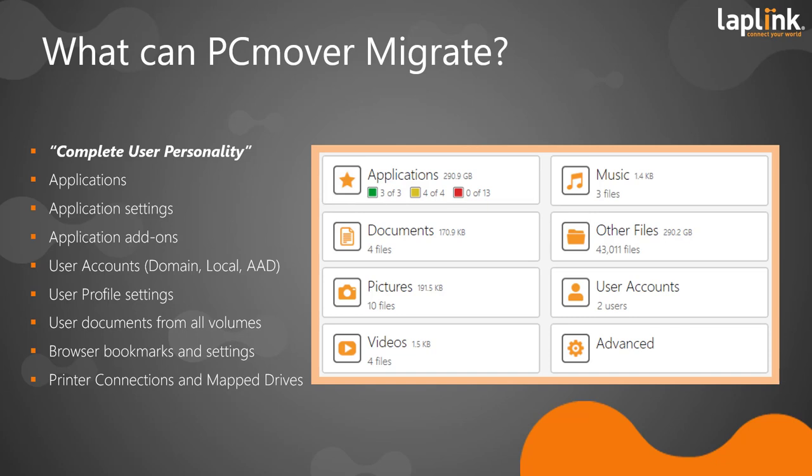When we talk about the complete user personality, we look at it from three levels. At the very bottom, we have files and folders — those typically stored in user profile folders, though some users save data outside those folders. On top of that, we have all the user profile settings, application preferences, and so forth — a lot of things in the registry. And then finally, the key differentiator of PCMover: the ability to transfer applications. These could be modern applications coded through the MSI setup routine, or what we call unregistered applications — older applications, often critical line-of-business apps where clients may not even have the install set anymore.